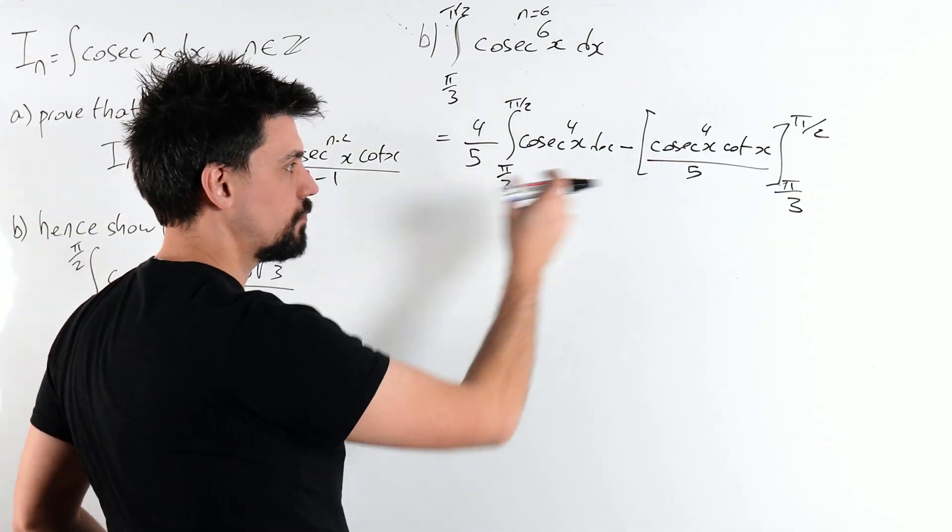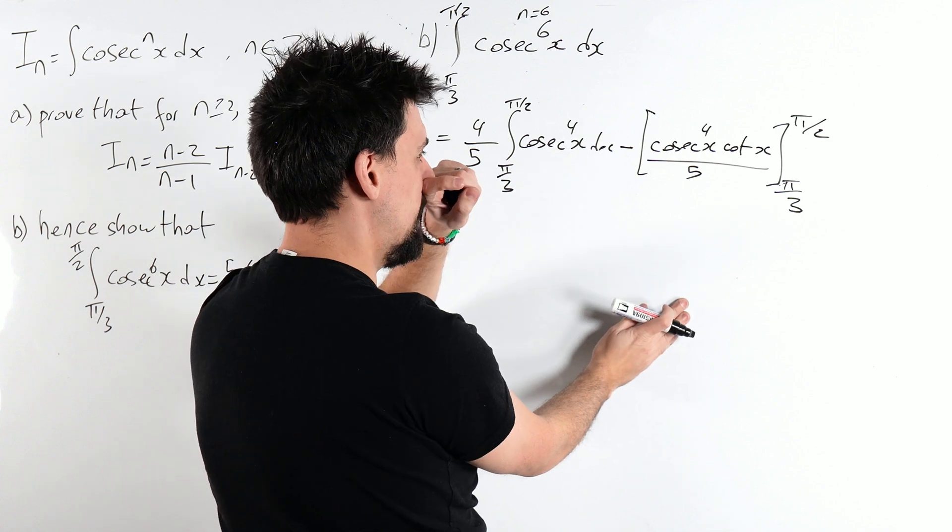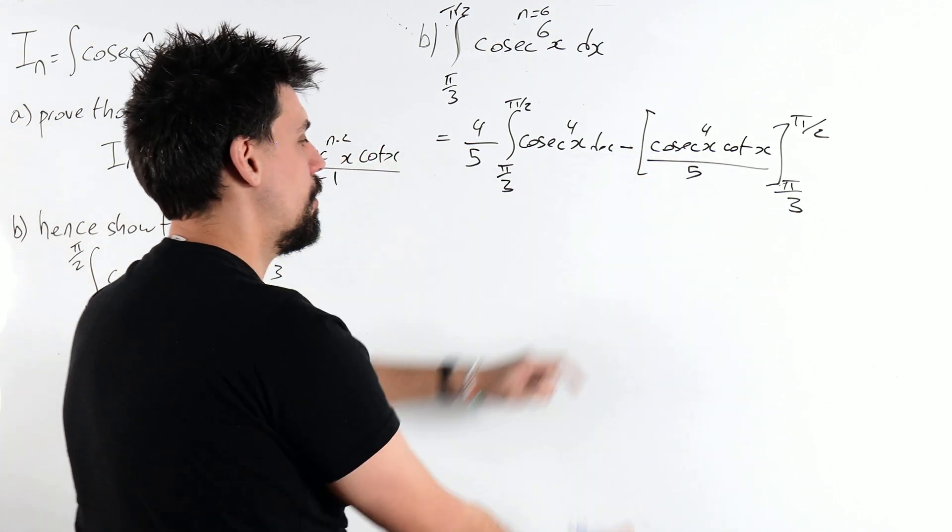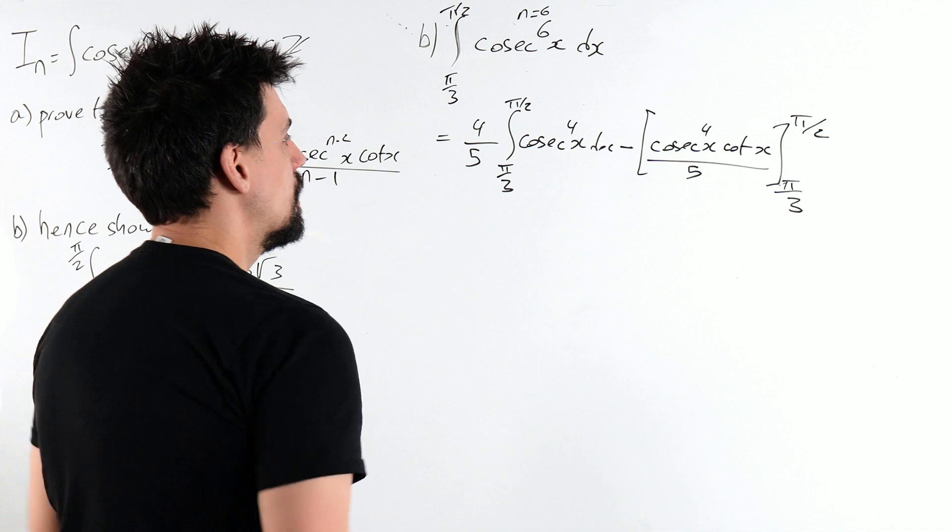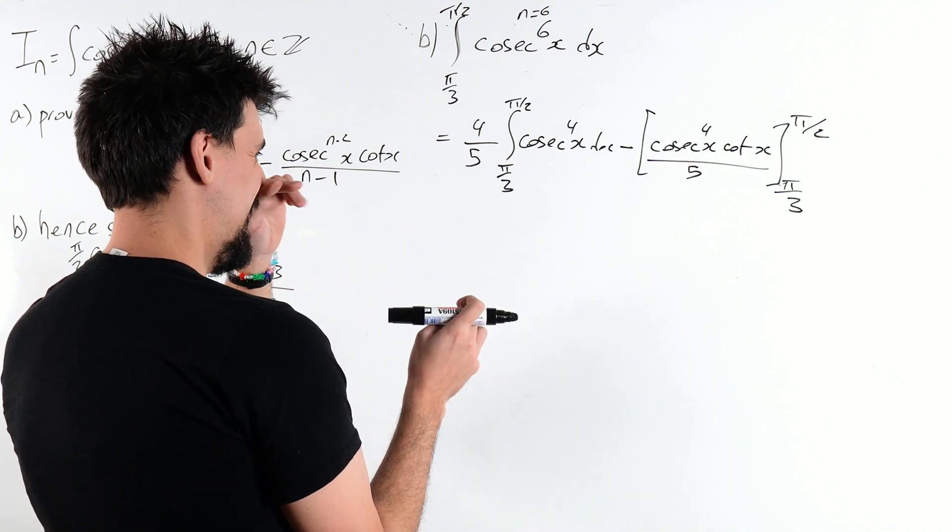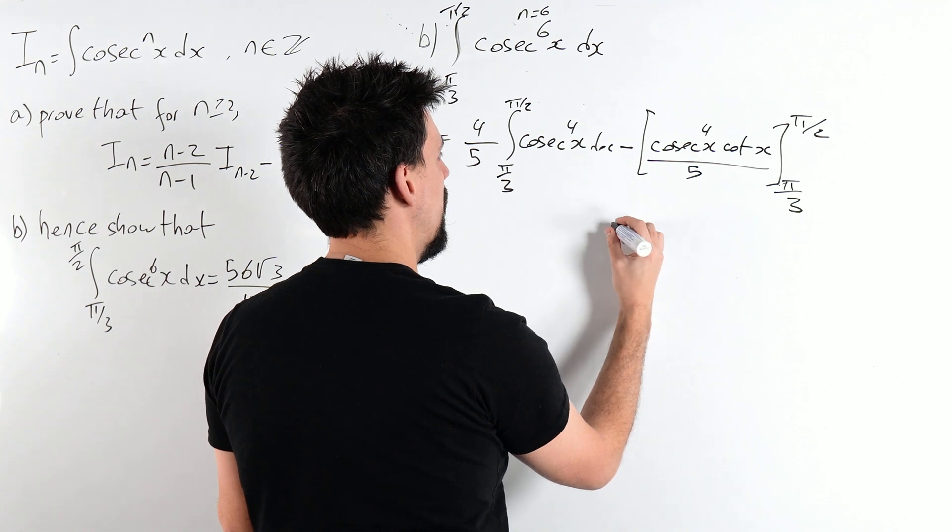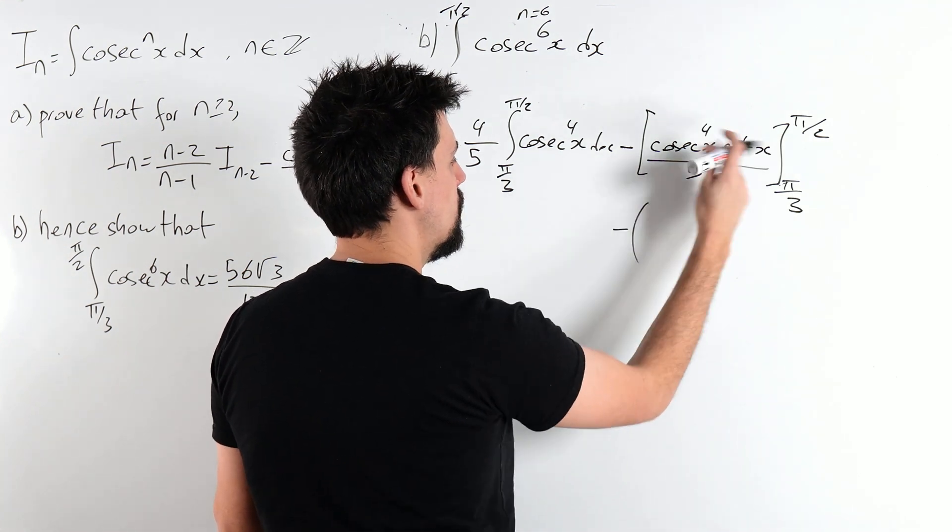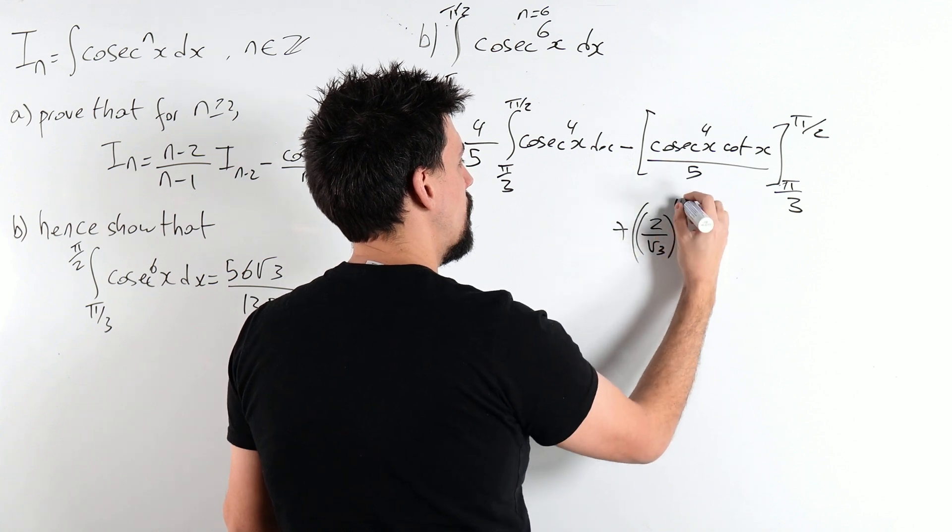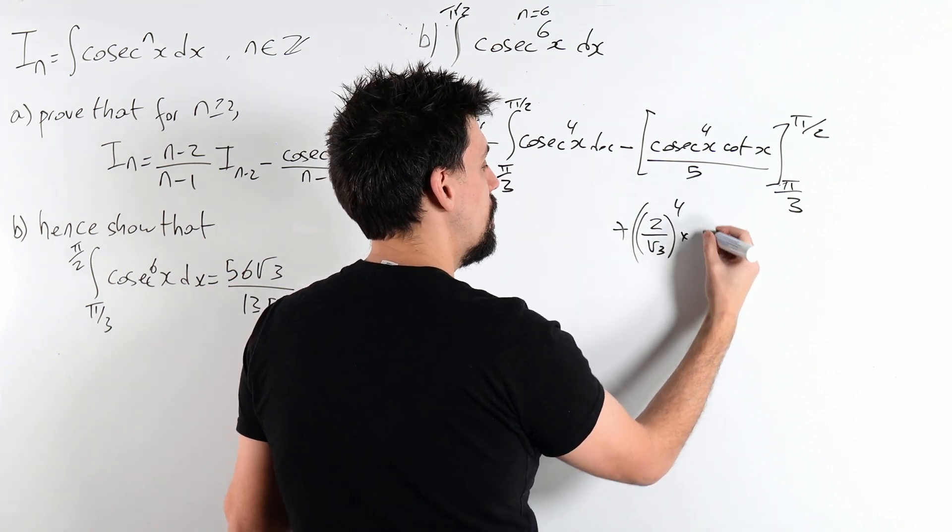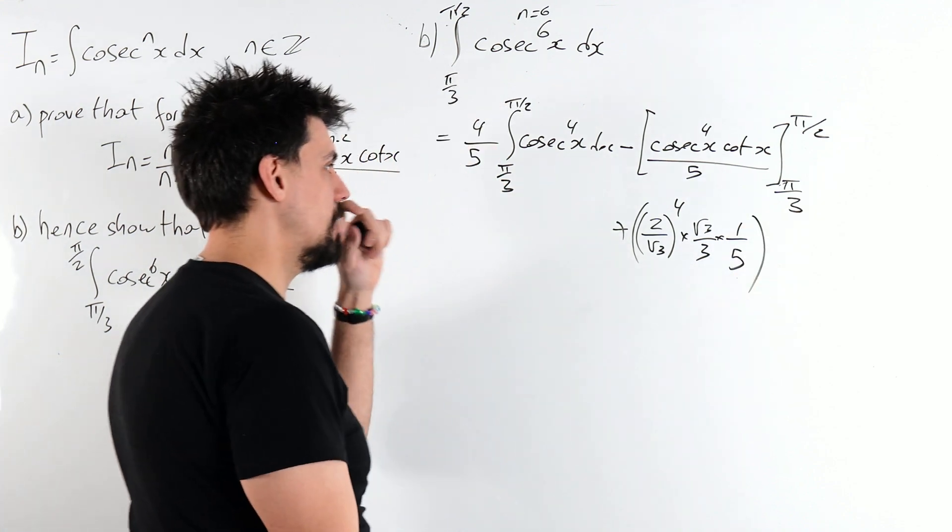Cosec to the 4x cot x over 5 between pi over 3 and pi over 2. Now let's figure this one out. Cot of pi over 2 is 0, so that disappears. Now we need to plug it in at pi over 3. Cosec of pi over 3 is 2 over root 3. So we will get a plus 2 over root 3 to the power of 4. Cot of pi over 3 is root 3 over 3. We've got that 1 fifth. I'll tidy that up in a second.